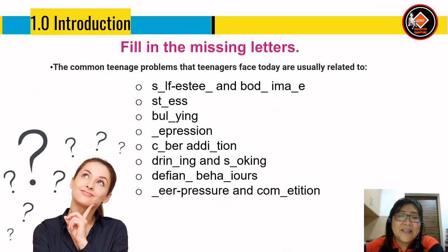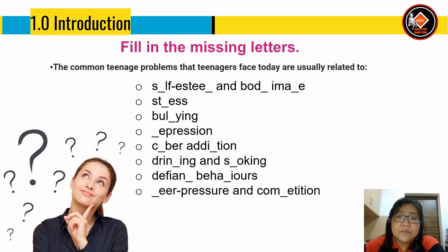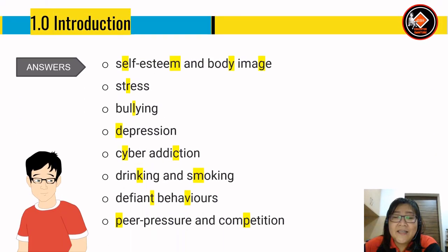Dear pupils, let's begin our lesson. Here you'll see eight teenage problems that teenagers face today. You have to fit in the missing letters. For example, 'S L F E S T E E' has a missing letter. The answers are: self-esteem and body image, stress, bullying, depression, cyber addiction, drinking and smoking, defiant behavior, and peer pressure and competition.